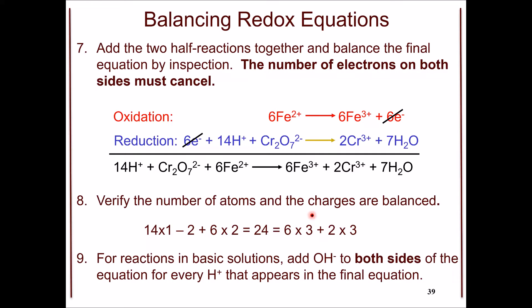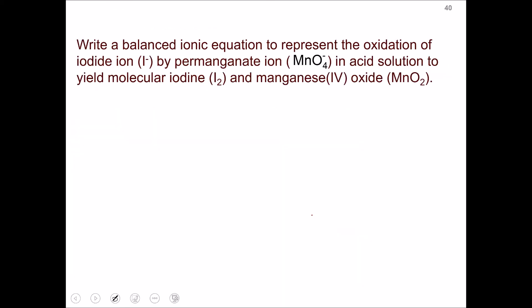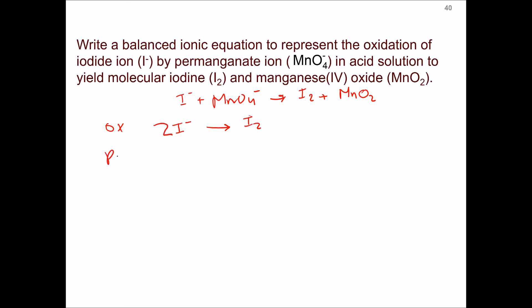If your reaction is in basic solution, you add hydroxide to both sides of the equation for every hydrogen that appears in the final equation. Now let's balance the equation for the oxidation of iodide using permanganate in acid solution to yield molecular iodine and manganese dioxide. We start with the unbalanced ionic equation: iodide combined with permanganate gives iodine plus manganese dioxide. We then split this into two half reactions: oxidation of iodide to iodine (requiring a coefficient of 2), and reduction of MnO₄⁻ to MnO₂.